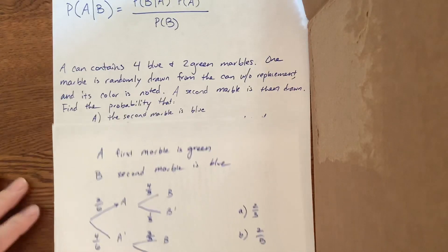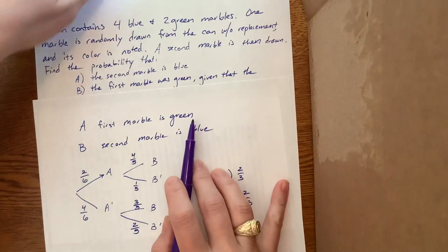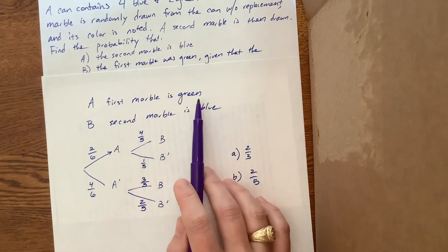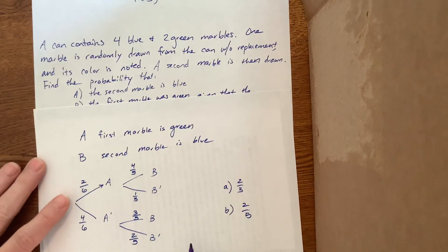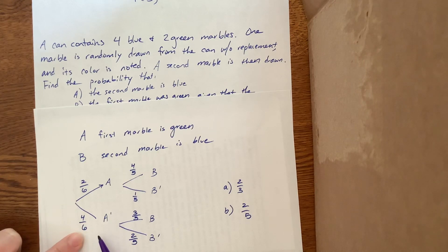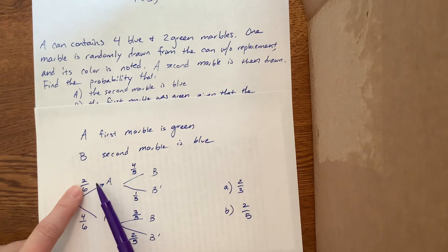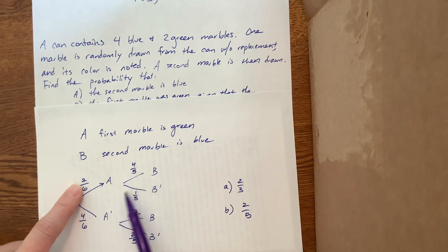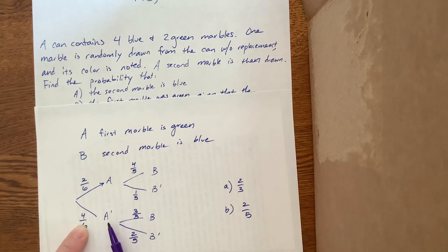The book defines event A as the first marble is green, and event B as the second marble is blue. There are two green marbles out of six total, so the probability of A is two-sixths, and the probability of not A is four-sixths. If the first marble was green, there are still four blue marbles out of five remaining, so the probability of B given A is four-fifths, and the probability of not B given A is one-fifth. If the first marble was blue, there are three blue out of five remaining and two not-blue out of five.